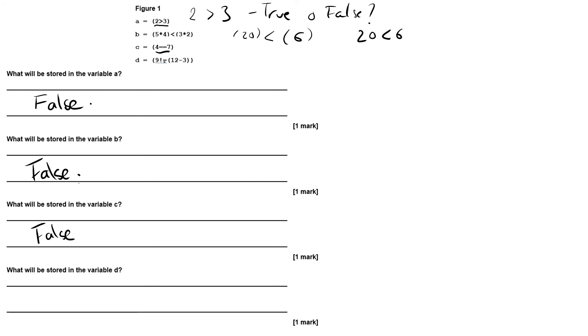And our final one, 'what will be stored in the variable d?' So we've got nine - nine is not equal to twelve take away three. So if we do the twelve take away three first, then that is nine. So we're saying nine is not equal to nine. So is that true or is that false? It's false.